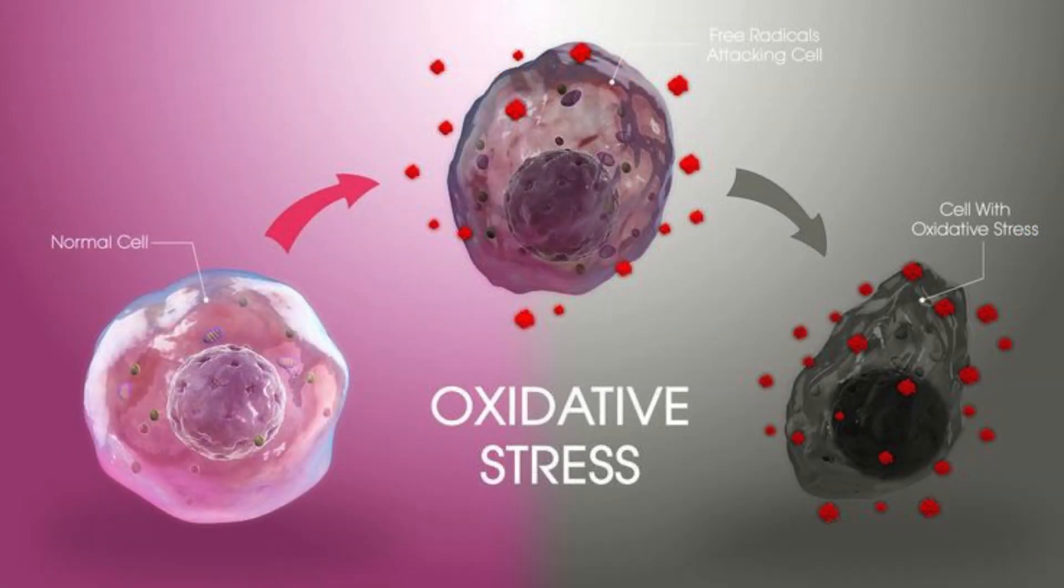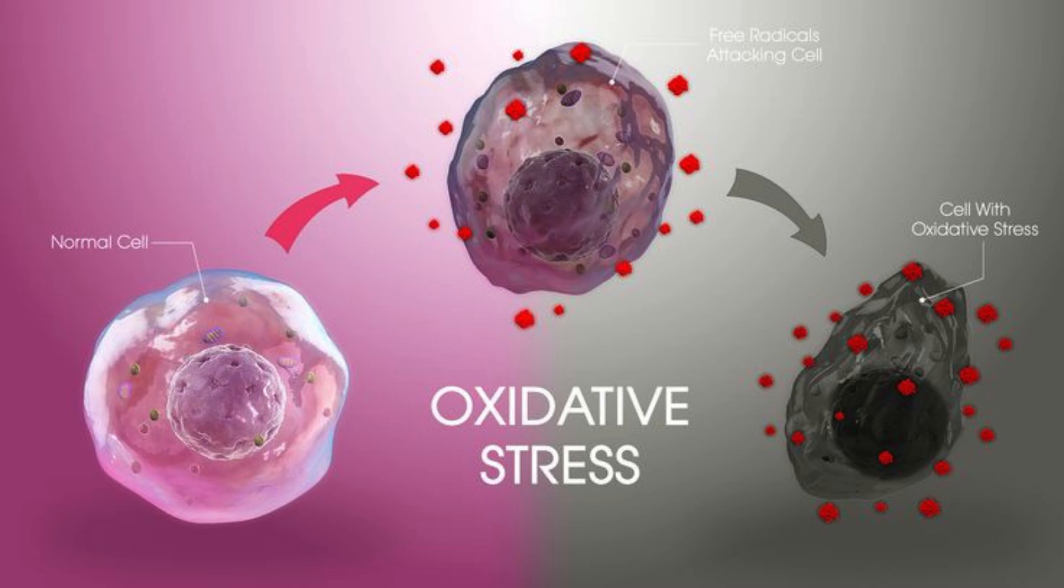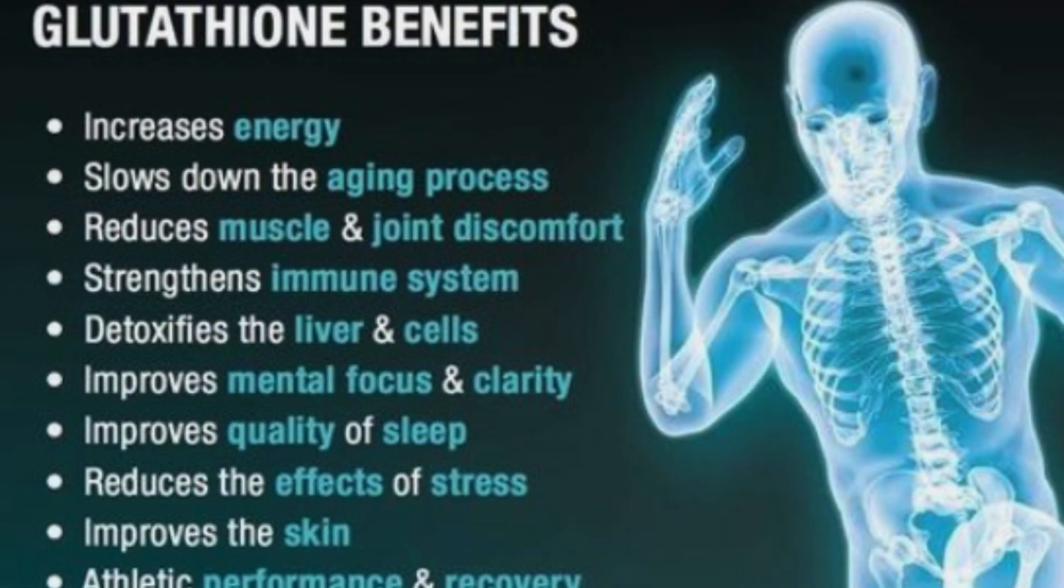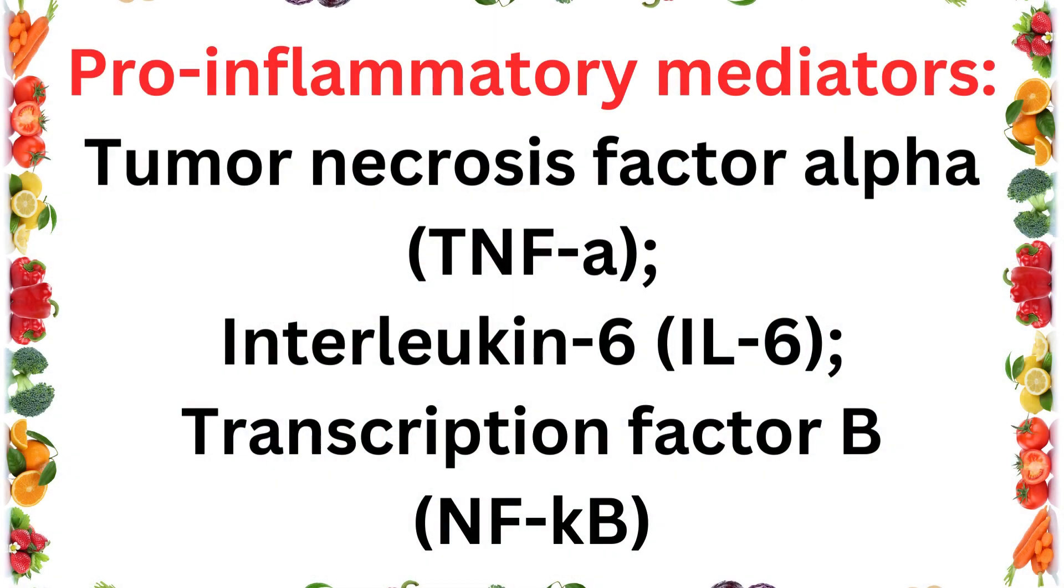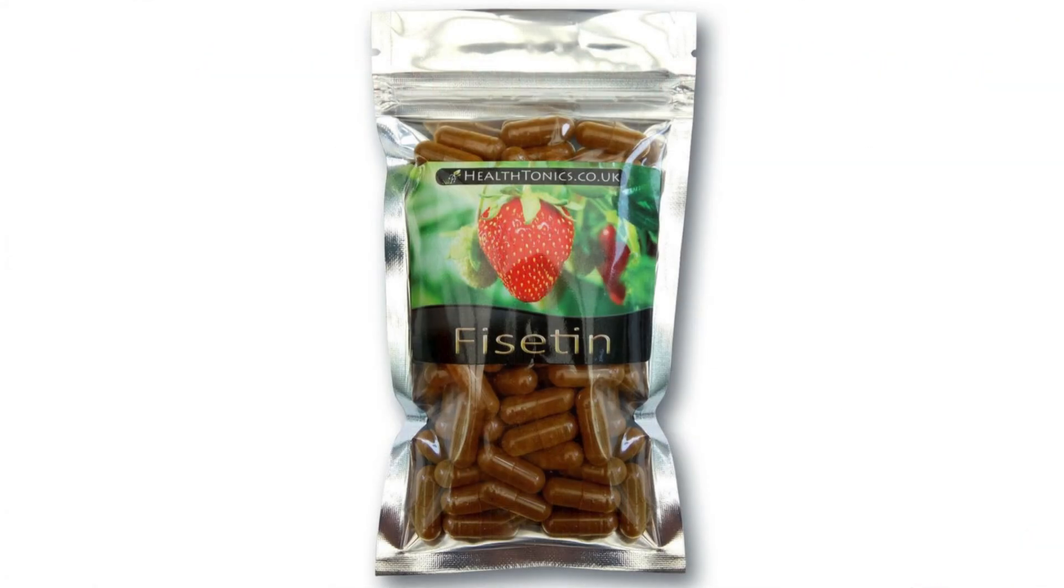When applied, Fisetin, as an antioxidant, captures free radicals, protects cells from oxidative stress, and is able to increase glutathione levels. It inhibits pro-inflammatory mediators such as tumor necrosis factor alpha, interleukin-6, and transcription factor B. Fisetin promotes cellular metabolism, reduces aging, activates sirtuins, and may promote longevity.